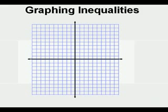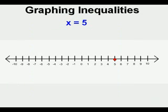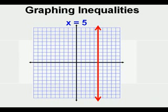A one-unknown solution can be graphed either on a number line as a point — this is the graph of x equals 5 on a number line — or as a line on a coordinate plane. This is also the graph of x equals 5 but on a coordinate plane.